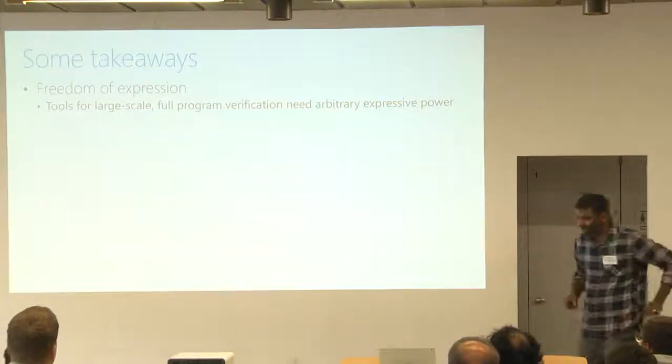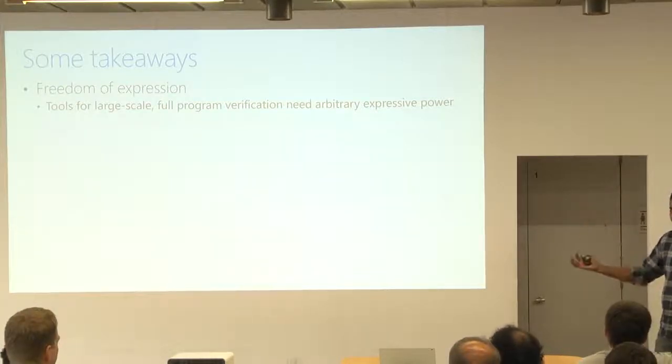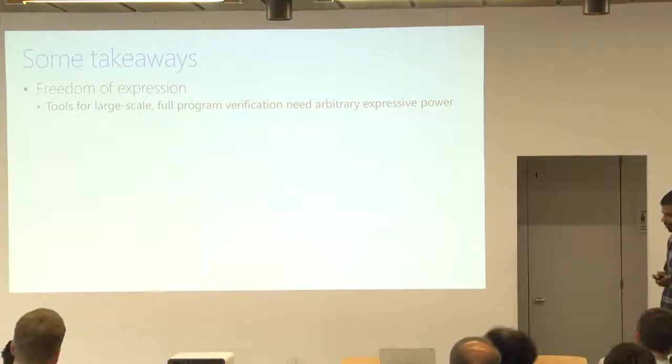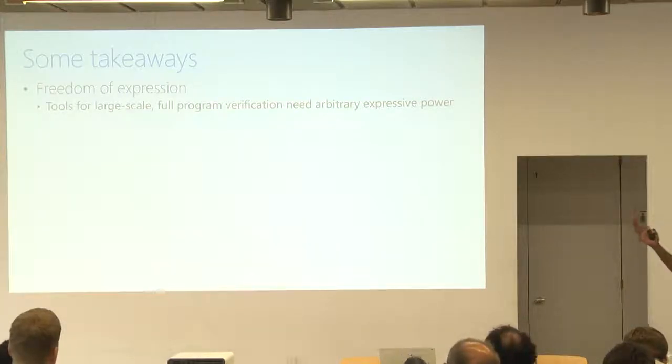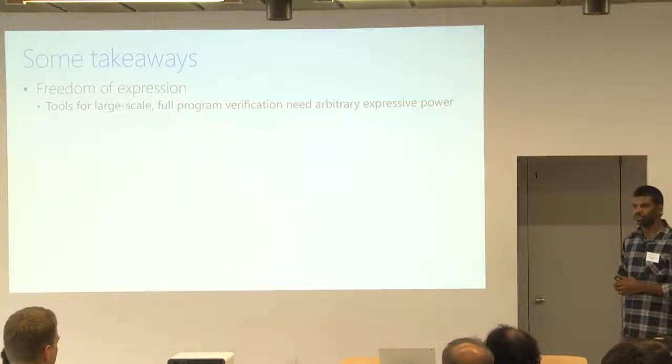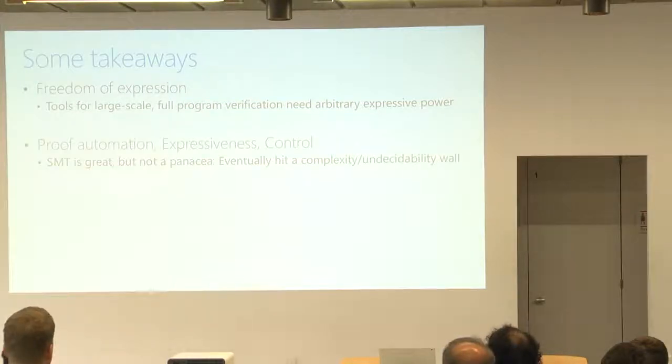So that's mostly what I have, so some takeaways. There's a few principles that I think are really important for F-star and its use in Everest. So I think freedom of expression is a really important one. Tools for large scale, full program verification, they need to have arbitrary expressive power. And that arbitrary expressive power, the way you get, one way in which you can get it, is by just using dependent type theory. Because at that point, you can state whatever you like. Now, if you're in such an expressive logic, there are some trade-offs. You want proof automation, you want expressiveness like I've already said, and you also want control.